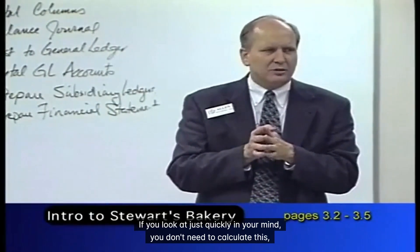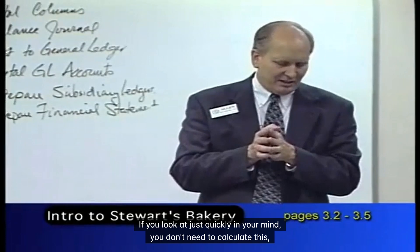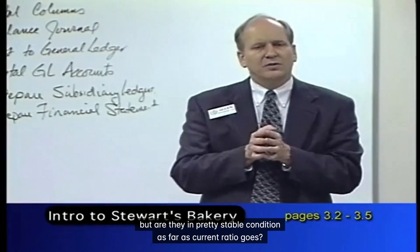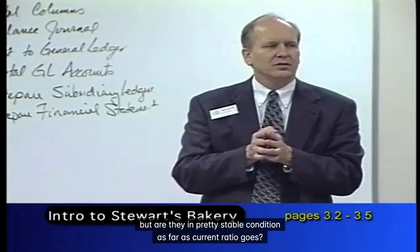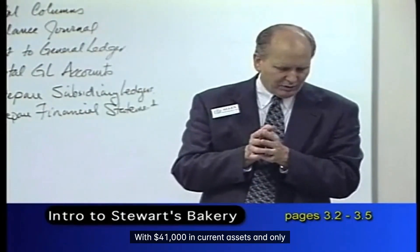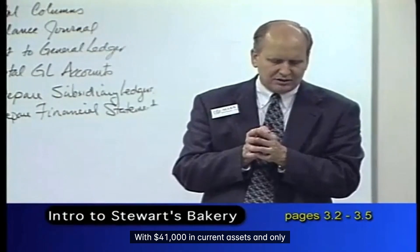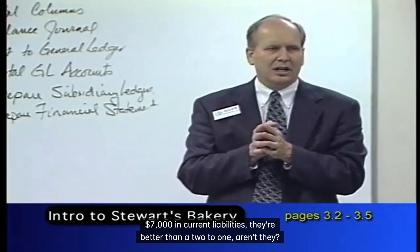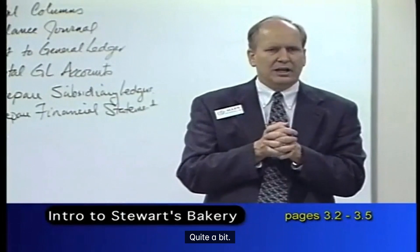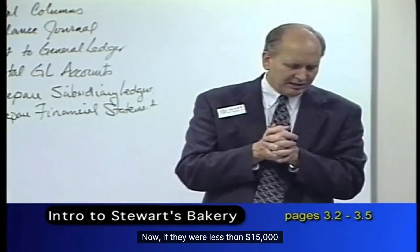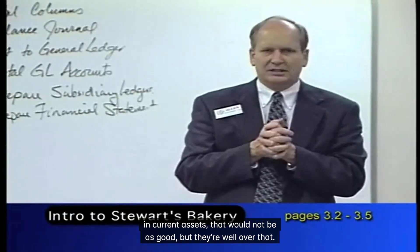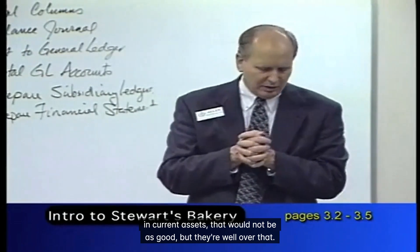Are they in pretty stable condition as far as current ratio goes? With $41,000 in current assets and only $7,000 in current liabilities, they're better than a two-to-one — quite a bit better. If they were less than $15,000 in current assets that would not be as good, but they're well over that.